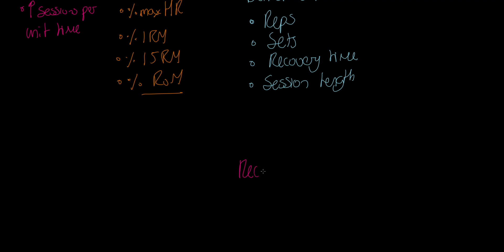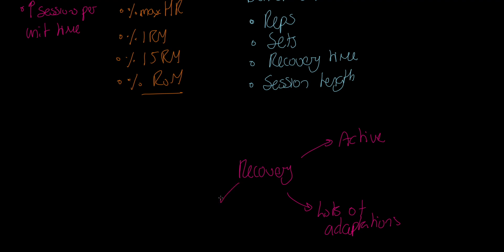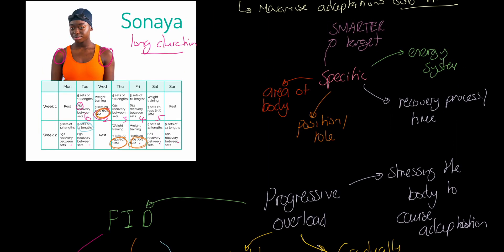We also need to think about recovery. Recovery should be active — some peripheral training so we're active during recovery. Crucially, almost all adaptations happen between sessions, not during them. Nutrition is key to the adaptation process, as is rest and sleep. Looking at Sanaya: she's got two rest days in week one and only one in week two. That feels like she might not be achieving progressive recovery — she may be overdoing it and breaking the recovery principle.